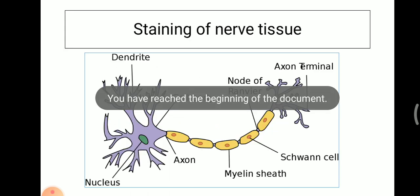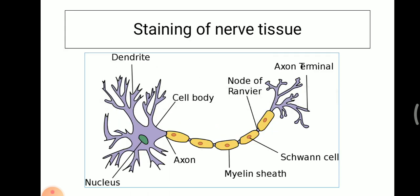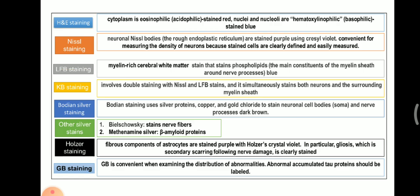We will see the staining of nerve cells or nerves, particularly staining of myelin. Before we see the staining techniques, you should know the basic structures of the nerve cell. First is H&E staining: cytoplasm is eosinophilic (acidophilic) and is stained red, while nuclei and nucleoli are hematoxylinophilic (basophilic) and are stained blue.